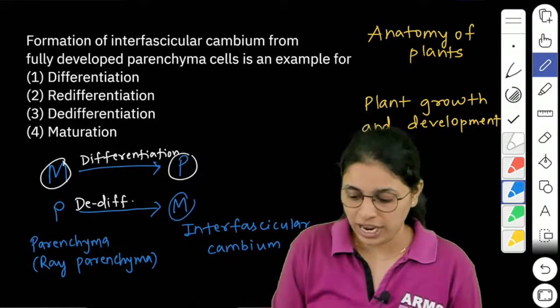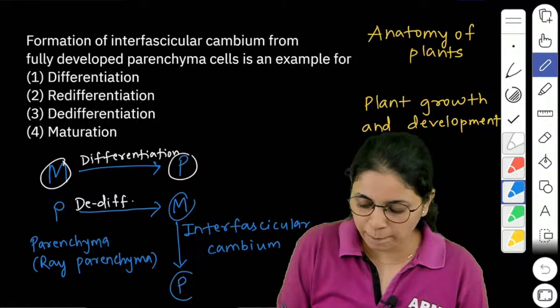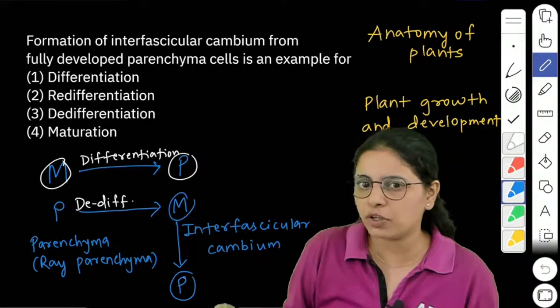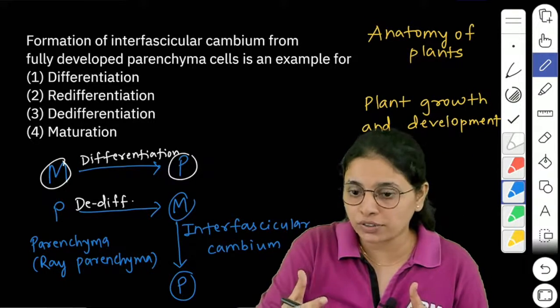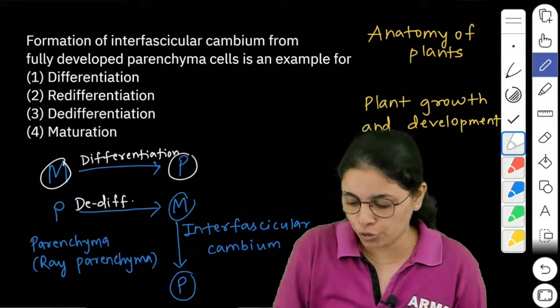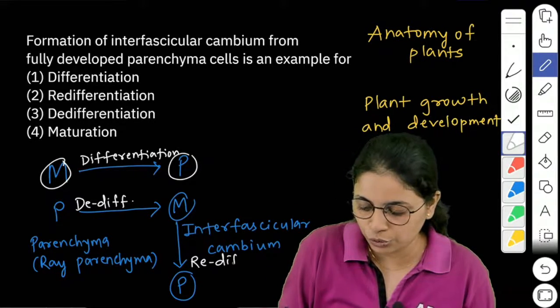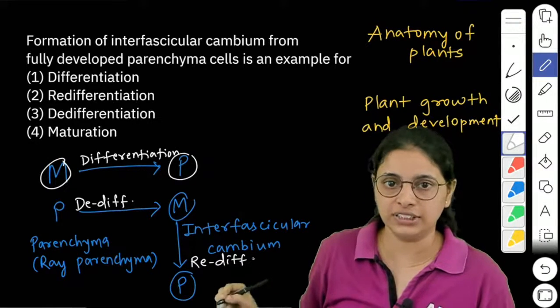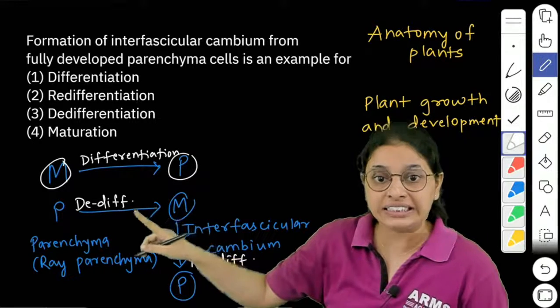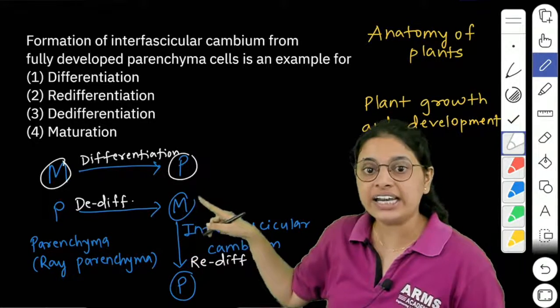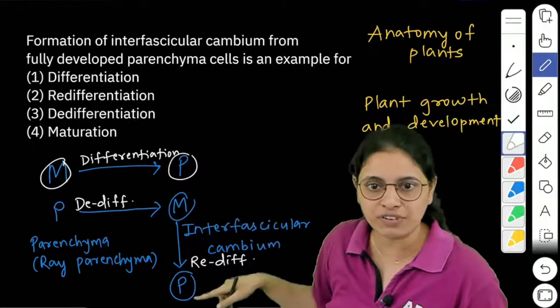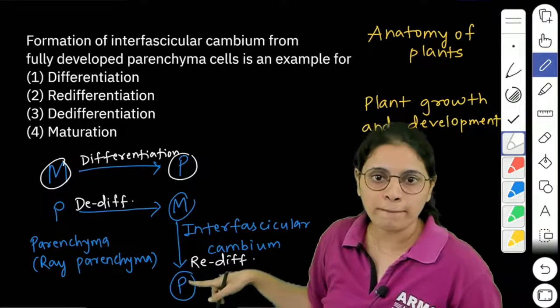De-differentiated one, and this again forms another permanent tissue, permanent cell like secondary xylem or secondary phloem. So this process, what will happen again? De-differentiation, that means re-differentiation. Simple: meristematic to permanent is differentiation. Permanent to meristematic is de-differentiation, and this de-differentiated one meristematic again differentiates. So there is re-differentiation and again you will get new permanent cells.